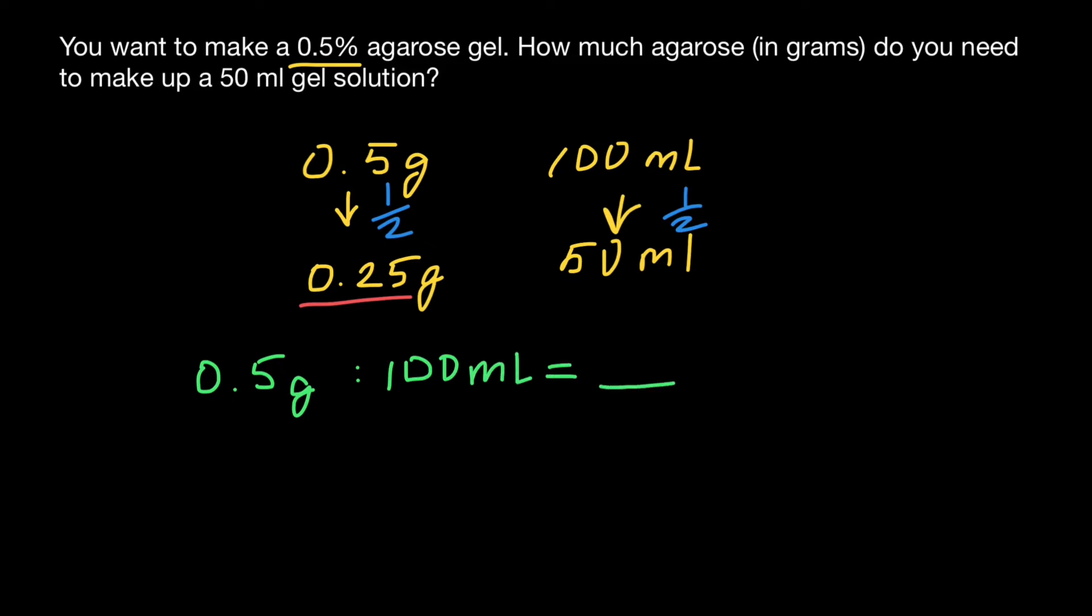we don't know how many grams per 50 milliliters of solution. So we put x here because we don't know this number in grams. In this case, we have one ratio here, another ratio here, and this is going to be a proportion.